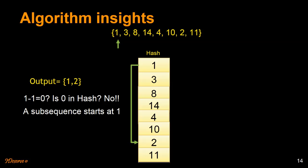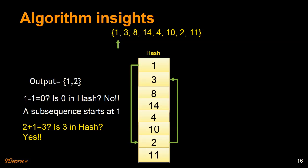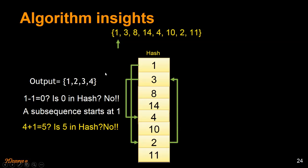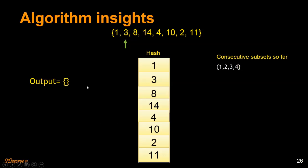We add 2 into the subset, then try to find 3 — is 3 in the hash? Yes. Then we try to find 4 — is 4 in the hash? Yes. As and when we find a consecutive number, we add it to the output subset. Then we try to find 5 — is 5 in the hash? No. So that's the subset starting at 1. We store it so we can compare all subsets at the end and find the largest consecutive subset.